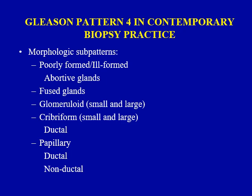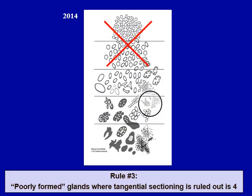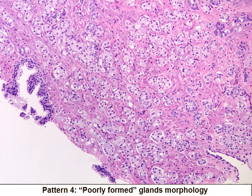Next, we move to Gleason pattern four, which is a very heterogeneous morphological pattern composed of several sub-patterns. Rule number three, introduced in the 2005 modified grading system, is that poorly formed glands with barely recognizable lumina — where tangential sectioning is ruled out — should be graded as Gleason pattern four. Here is a nice example of the poorly formed gland pattern; these glands are discrete but very poorly formed, and you can barely see any lumina within them.